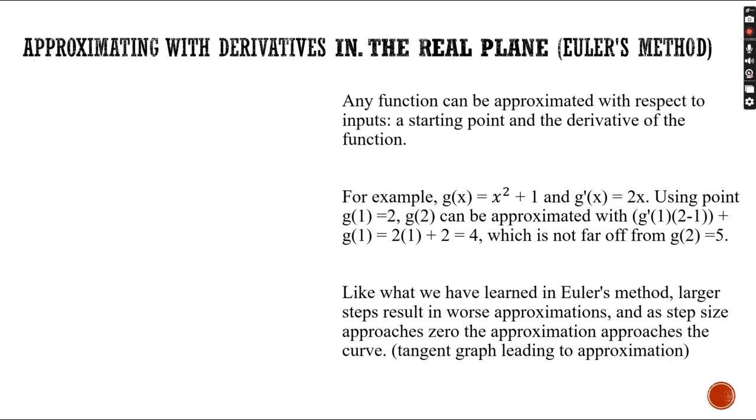Like what we have learned in Euler's method, larger step sizes have worse approximations. And as step sizes approach 0, the approximation approaches the curve. So if our step size was 1 half or 1 fourth, it would be a much better approximation than a step size of 1.